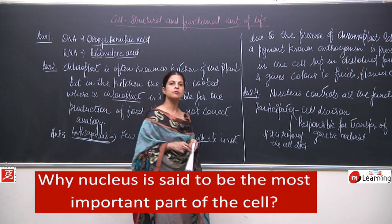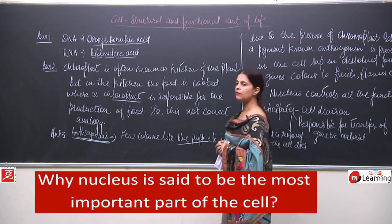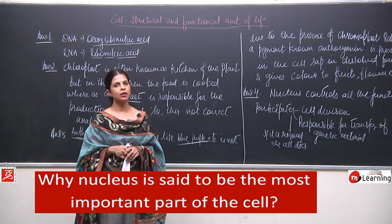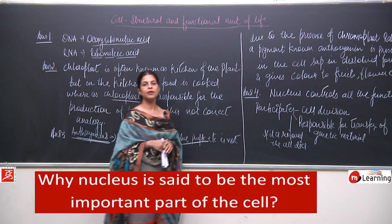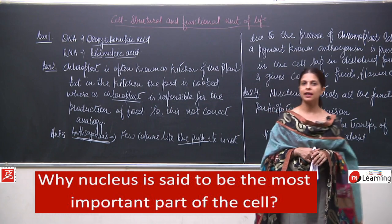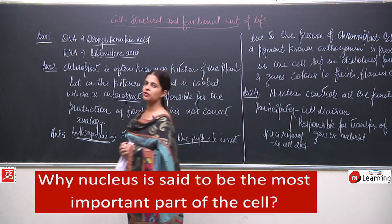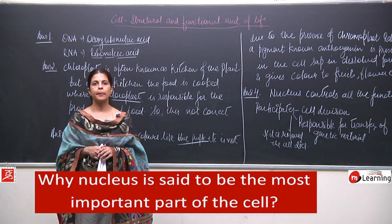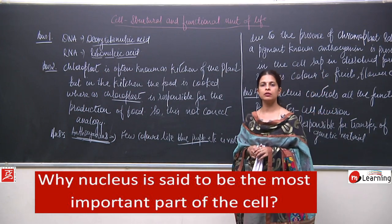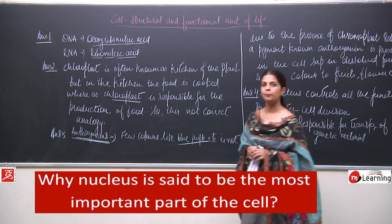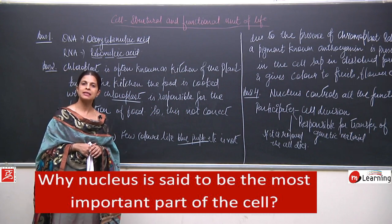Question number 5: Write the names of the smallest, longest, and largest cell. When we talk about the smallest cell, bacterial cells are the ones that fall in this category. Their size is from 0.1 to 0.5 micrometers — one micrometer is one millionth part of a meter, so just imagine how small it is.